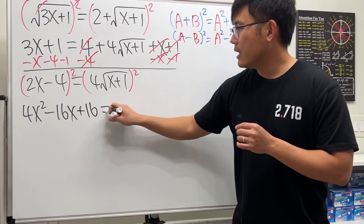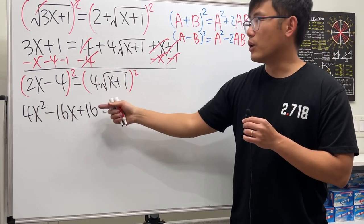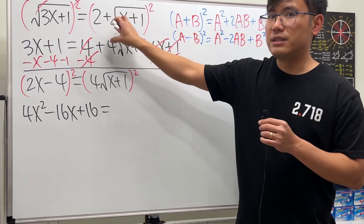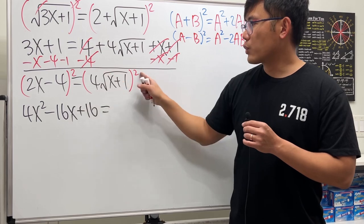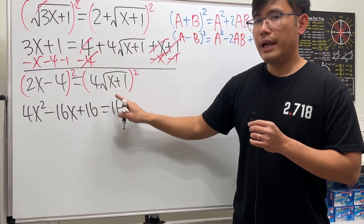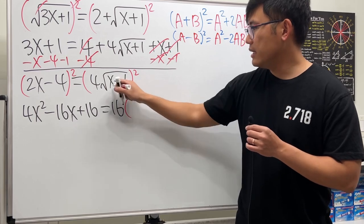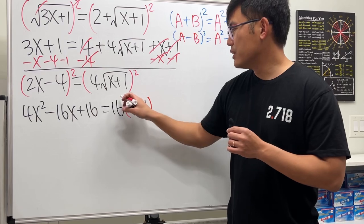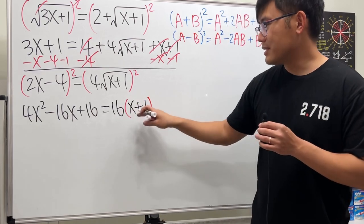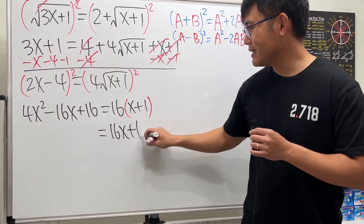And then on the right-hand side, this is just one term because we have 4 times square root. So this right here, we don't have to do the things that we did here, because we can just distribute the power. 4 square is 16. And then the square root square, they cancel. So we just have a parenthesis, and then we have the x plus 1. So technically here, this is just negative 16x. This is just 16 plus 16. This is just 16x plus 16. There.